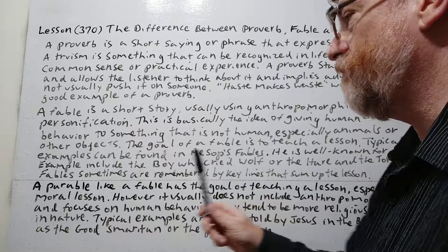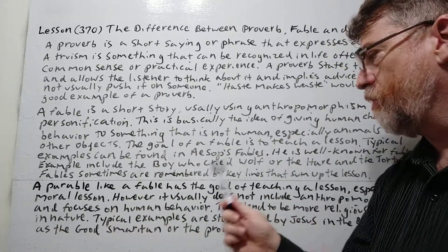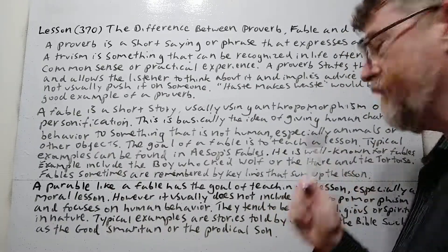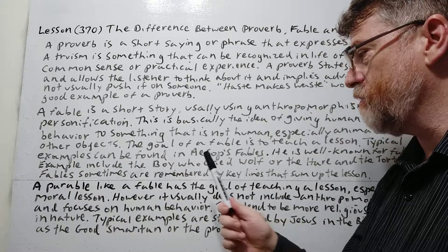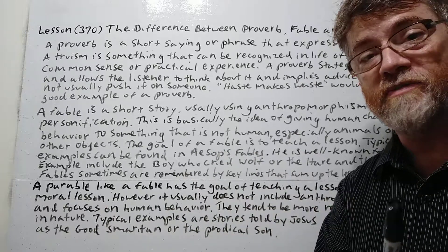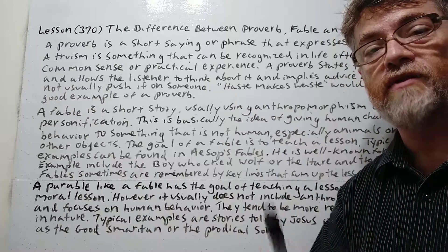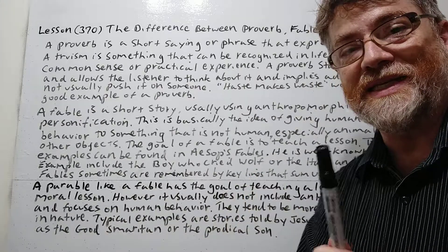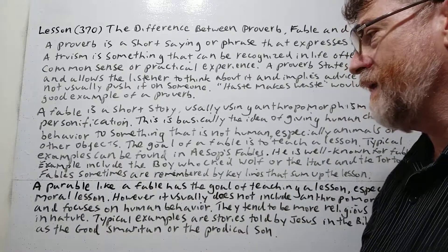Aesop is well known for fables. Examples include "The Boy Who Cried Wolf" and "The Hare and the Tortoise." Most people are familiar with these two — the boy who kept crying wolf until nobody believed him, and the race between the hare (the rabbit) and the tortoise, where the rabbit went to sleep and the turtle ended up beating him.